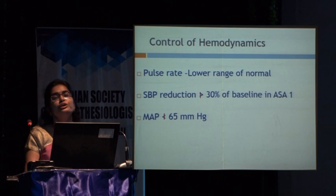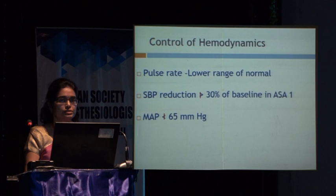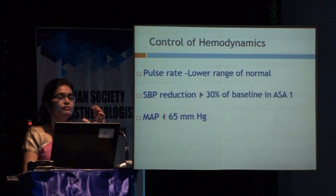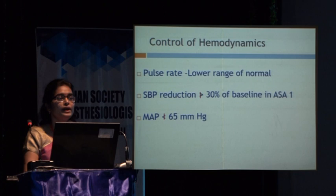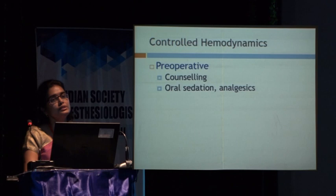For general anesthesia, control of hemodynamics becomes our territory. We try to maintain pulse rate in the lower range of normal, not allowing reduction in SBP to more than 30% of baseline — and that too only in ASA grade 1 patients. In hypertensives, be more careful. Recent studies say maintain within 10% of baseline; SBP should remain above 100 and mean arterial pressure should not go below 65. In fact, if you control the pulse rate well, even with MAP above 65, there is no bleeding and no problem in the surgical field — so chasing MAP should be avoided.